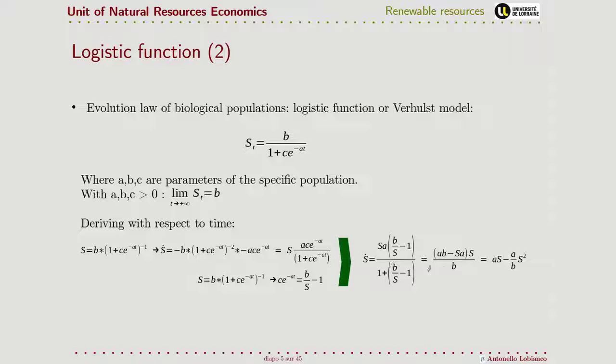If we derive with respect to time, we write the equation in these terms and take the derivative with respect to time to both sides. Here we have the derivative of the stock. We apply the chain rule and notice that we can isolate the stock again. We can rewrite this equation, then reuse the equations to isolate this factor, replace it here, and finally rewrite our equation of the variation of the stock as a function of the stock itself.